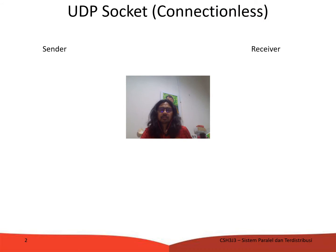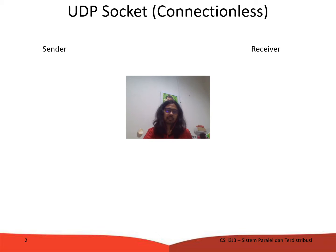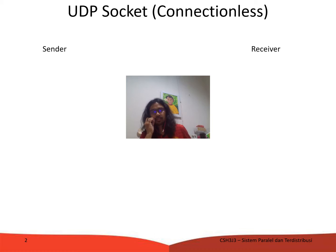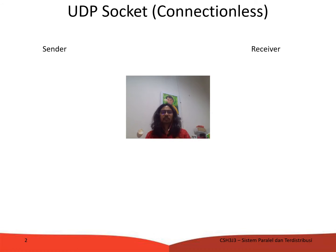UDP socket, like we discussed earlier, operates at the transport layer and is connectionless. When sending a message to the receiver, there are processes involved. Here we have two streams: the sender stream and the receiver stream.